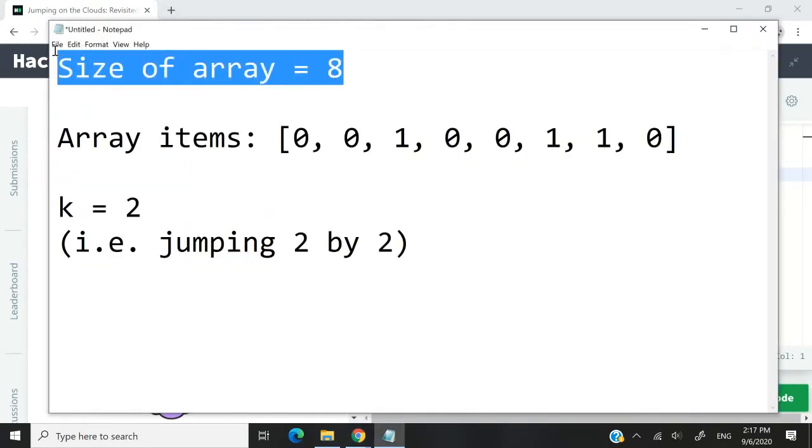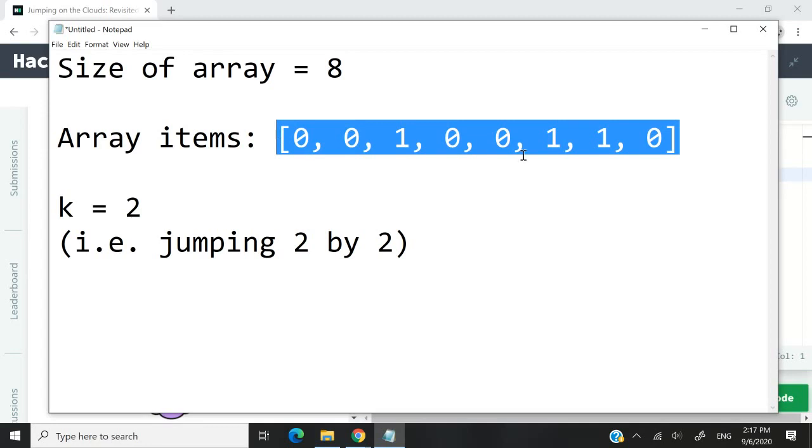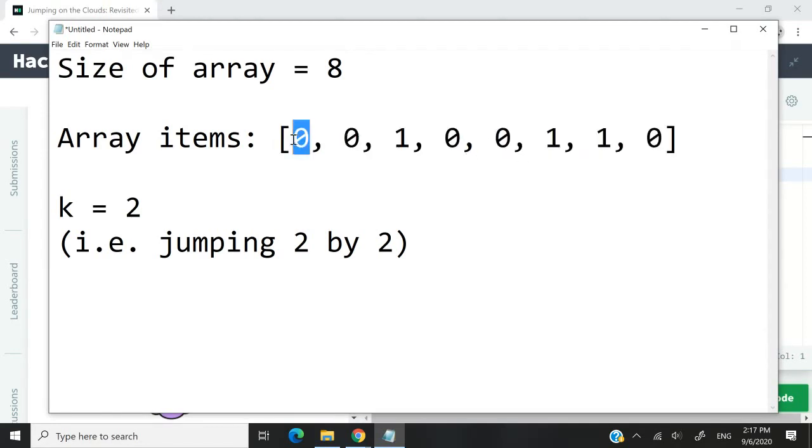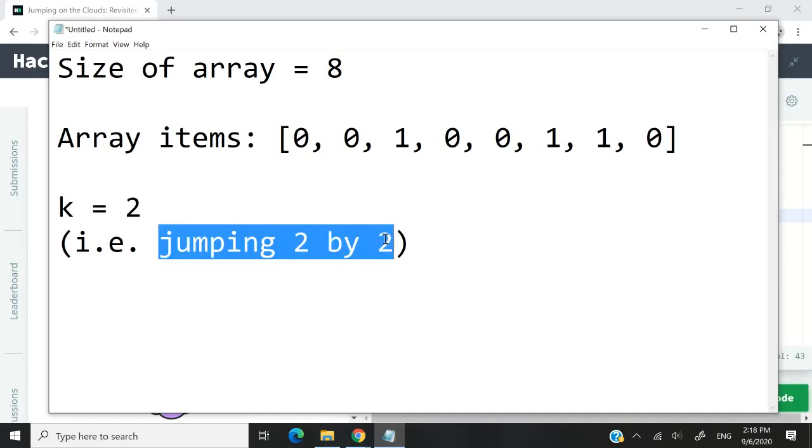What we need to do in this challenge is to determine her final level of energy when she lands back on cloud zero. So let's say we have an array of size eight. These are the items in the array. So we have zeros and ones. Like I said, zero means it's a cumulus cloud, one means it's a thunderhead. And k here equals two. So in our function for our solution, we're going to receive k as a parameter.